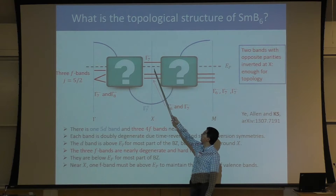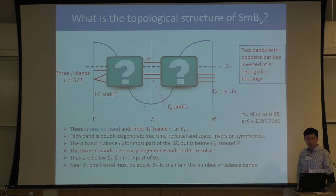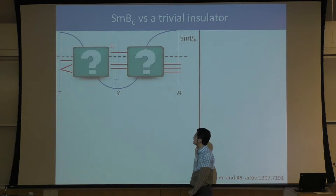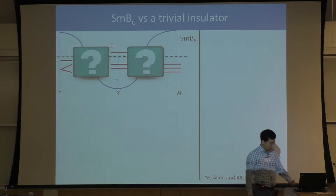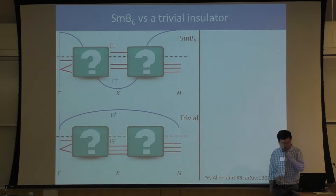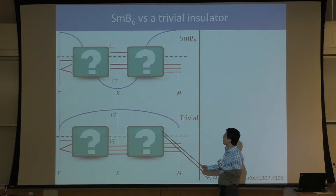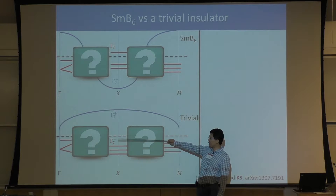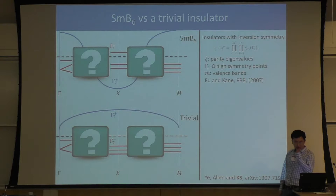It turns out that this band inversion at X is the only input we need to determine all the topological structure of SMB6. To determine the topological structure, we compare SMB6 with a trivial insulator obtained by increasing the energy of the D band above the Fermi level and reducing the energy of the F band. Since SMB6 has space inversion symmetry, we can use a very nice formula developed by Fu and Kane.